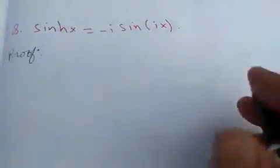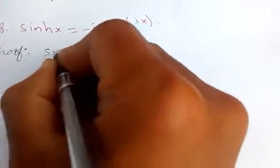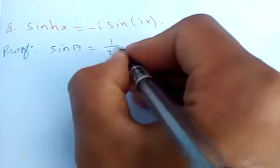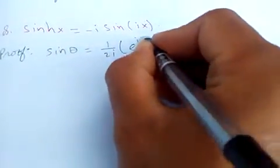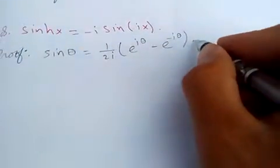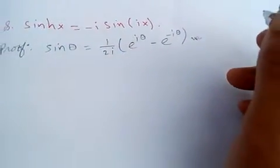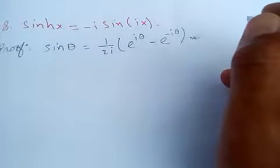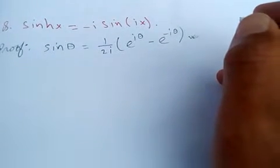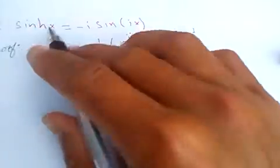We know that sin(θ) = (1/2i)(e^(iθ) - e^(-iθ)). This is called Euler's formula for sine.